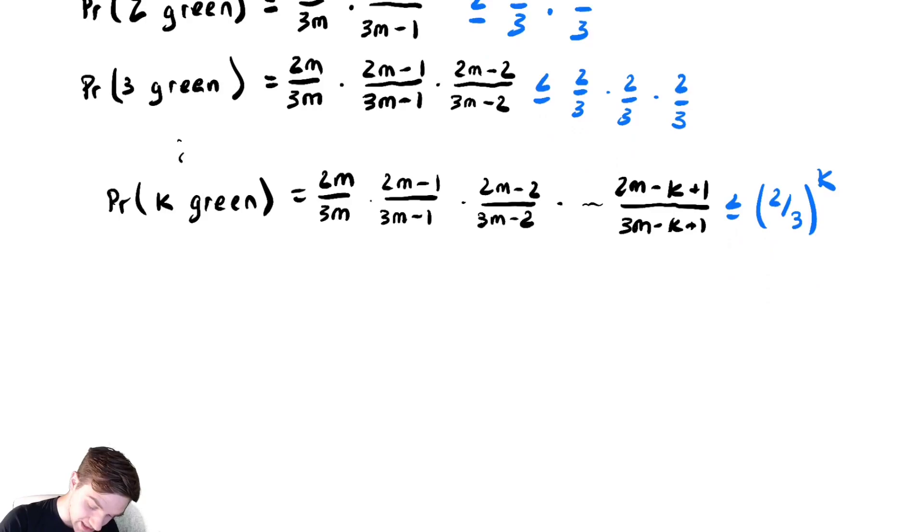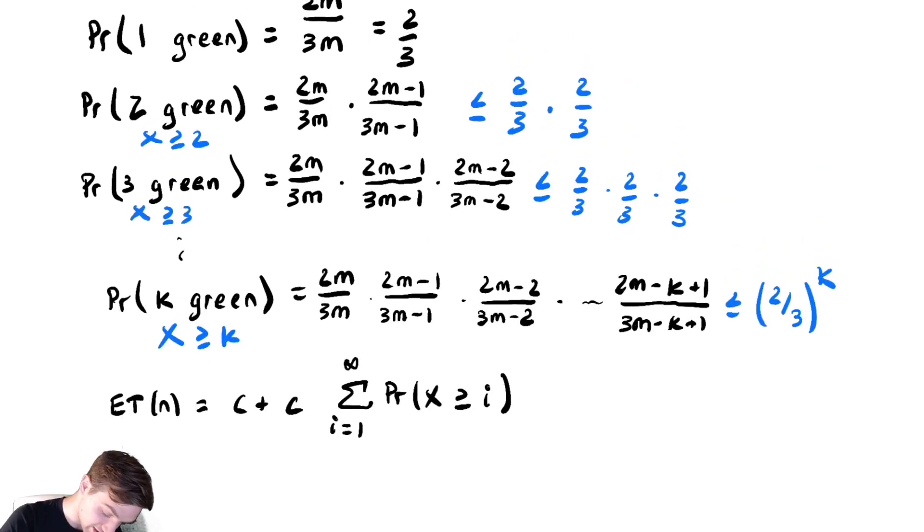So my expected runtime here, the expected time, is equal to c plus c times the sum from i equals 1 to infinity of the probability that x is greater than or equal to i. And I used a bit of a different notation here. This bottom term would be that x is greater than or equal to k. This would be x greater than or equal to 3, x greater than or equal to 2, and x greater than or equal to 1. I used a more natural language notation there, but let's transfer more to our mathematical notation now.